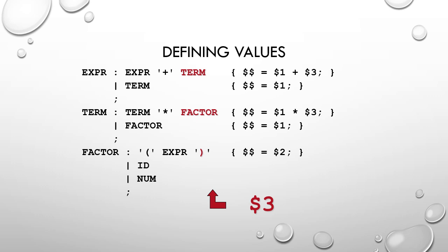For 'expression produces term', $$ equals $1 means whatever value the first term contains as its attribute is assigned as the attribute to the left-hand side symbol. For 'term produces term multiplied by factor', $$ equals $1 times $3. For 'factor produces opening expr closing', $$ equals $2, since expr is the second symbol and its attribute value is given as the attribute to the left-hand side factor symbol.